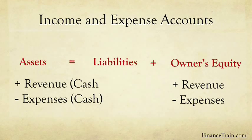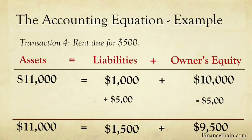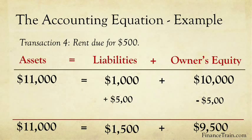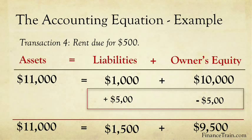The accounting equation is represented on screen. Let's continue with our case study of Web Design Inc. The month has ended and the rent of $500 is due for the office space. Since the rent is not yet paid, there is no impact on assets. The rent due will become a liability, and at the same time the rent will be recognized as an expense. So liabilities will increase by $500 and the capital will reduce by $500. This way, we can see that the accounting equation is always balanced.